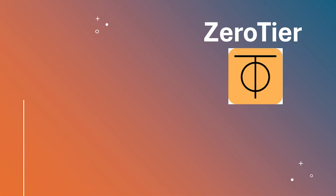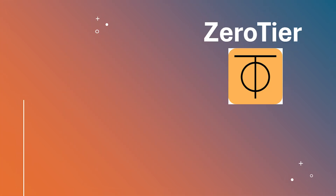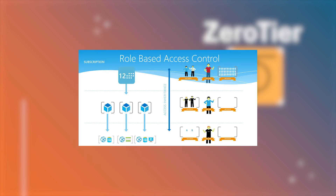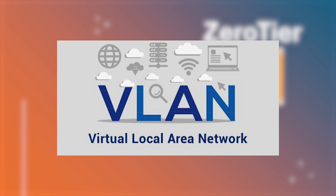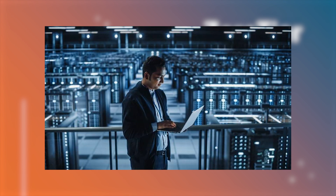ZeroTier operates differently. It creates full virtual networks that act like real Ethernet connections, allowing direct communication between devices no matter where they are. Unlike TailScale, which routes all traffic through identity-based access, ZeroTier enables true peer-to-peer networking, reducing latency and improving performance. It also supports custom network rules, virtual LANs, and even layer-2 bridging, making it a great option for developers, network engineers, and advanced users who need more control over their networking environment.